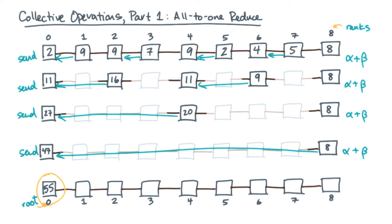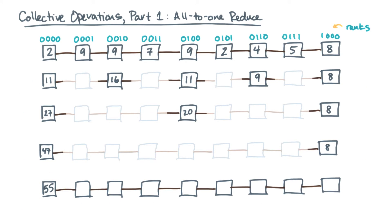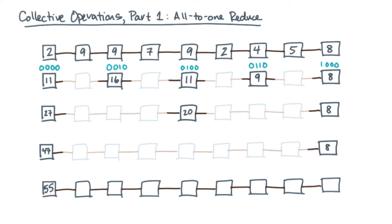To implement this scheme, here's a useful fact. Suppose we replace the ranks by their equivalent binary strings. In the first round, the odds send to the evens — the odds all have a 1 in their least significant bit, and the evens all have 0. In the next round, only processes with a 0 in their least significant bit participate, and nodes with a 1 in their second bit send to nodes with a 0 in their second bit. So it's basically odds to evens where you drop off the last bit.